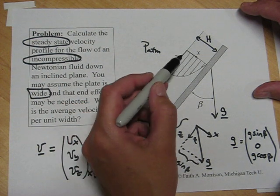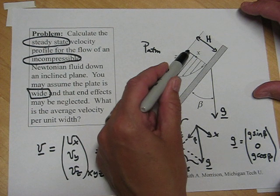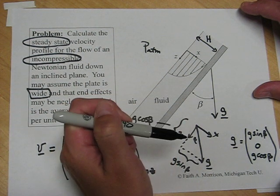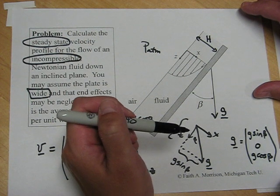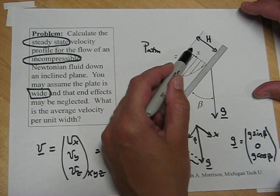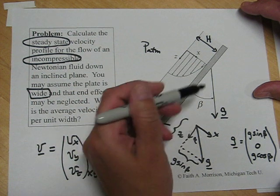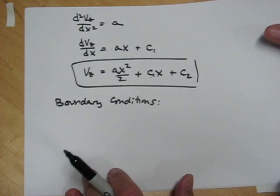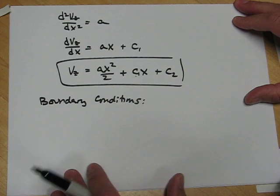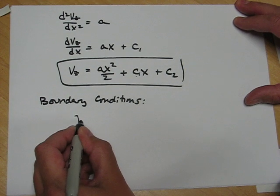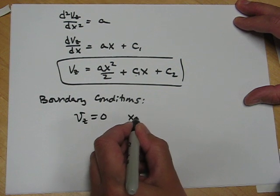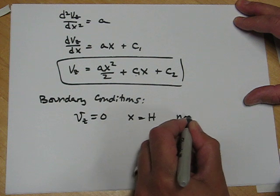To use this boundary condition, we need to write in our coordinate system the location of the wall and then what is the value of the function vz at the wall. So the location of the wall is x equal h, and what's happening is that the velocity is going to zero. So our first velocity boundary condition is going to be at the wall, vz is zero when x is equal to h. This is the no-slip condition.